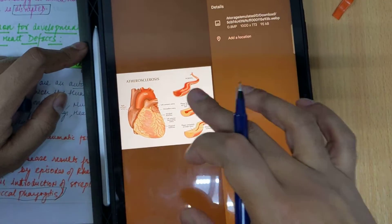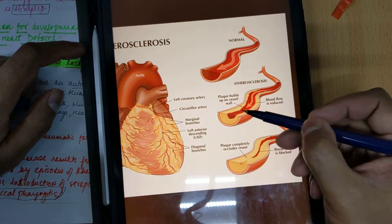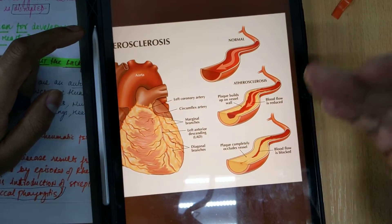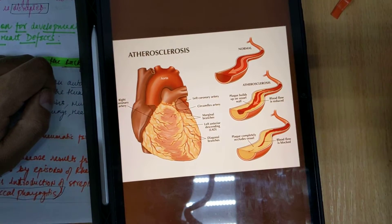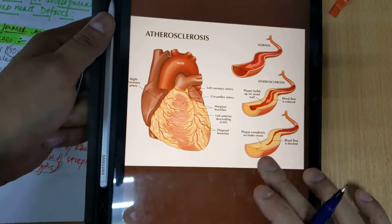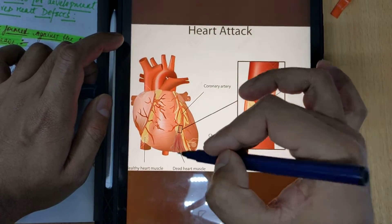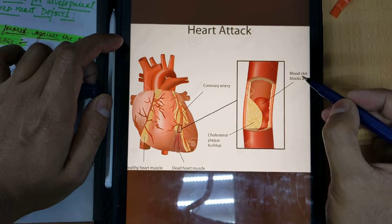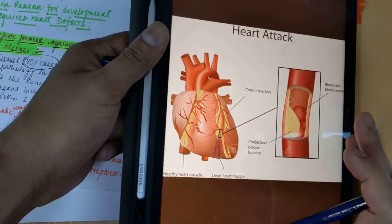In this image showing atherosclerosis, you can see a normal blood vessel compared to one where plaque builds up on the vessel wall and blood flow is reduced. Further plaque can completely occlude the vessel and blood flow is blocked. In severe atherosclerosis there can be permanent stoppage of blood flow, which can slowly progress to a chronic stage and lead to heart attack due to disruption of blood supply. Blood clot and plaque buildup together can cause permanent disruption of blood supply to the heart.